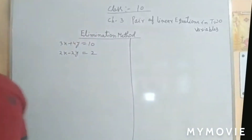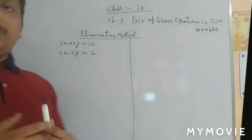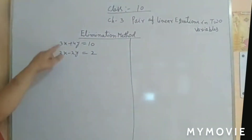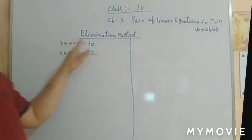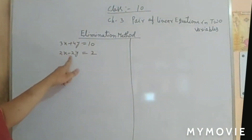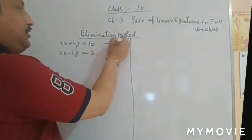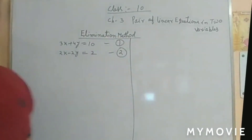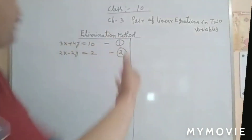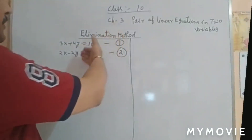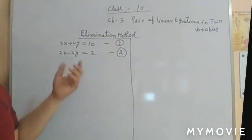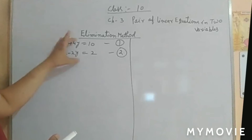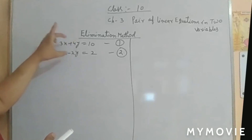We study how we can solve a pair of linear equations using the elimination method. The two equations are: 3x + 4y = 10 and 2x - 2y = 2 — equation 1 and equation 2. In the elimination method, we eliminate one variable. Since each equation has two variables, x and y, we eliminate either x or y.